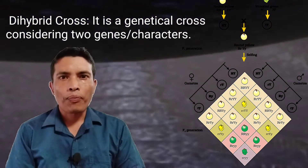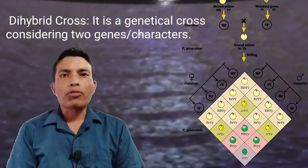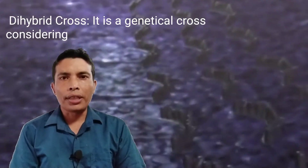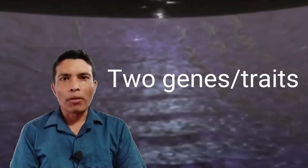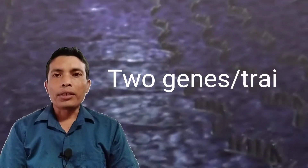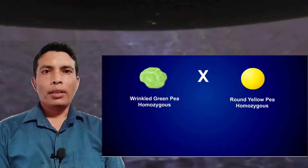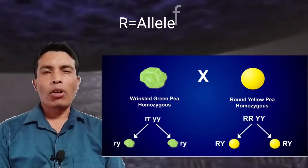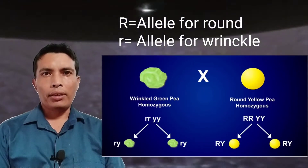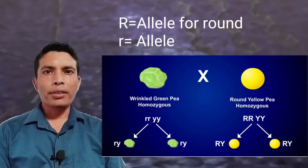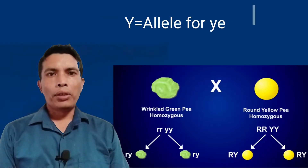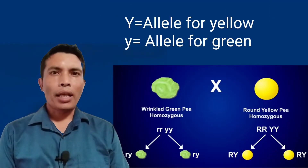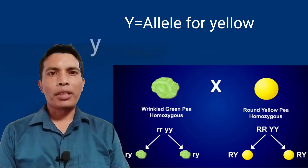A dihybrid cross is a genetical cross between individuals of a species considering the inheritance of contrasting pairs of two traits. Let us have an example of a dihybrid cross. We will use the genotypic symbols: capital R for the dominant round seed shape and small r for wrinkled seed shape, capital Y for dominant yellow seed color and small y for recessive green seed color.